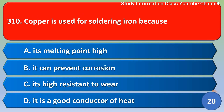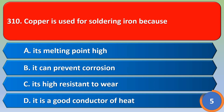Next question: copper is used for soldering iron because — Option A: its melting point is high, Option B: it can prevent corrosion, Option C: its high resistance to wear, Option D: it is a good conductor of heat. The right answer is Option D, it is a good conductor of heat.